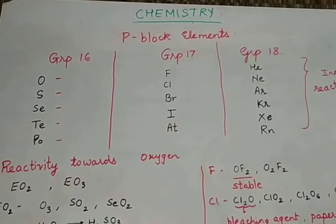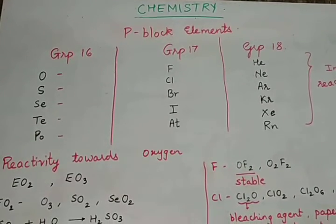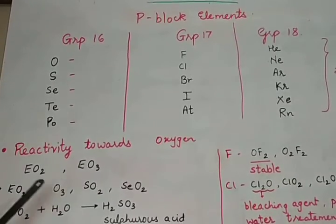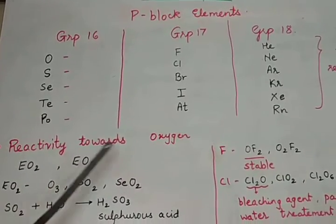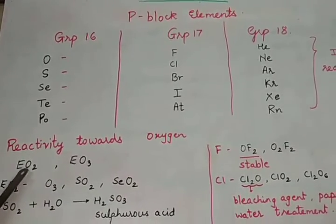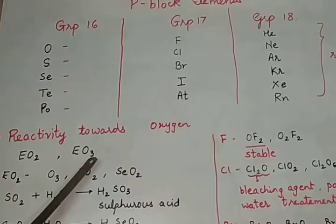This is about the reactivity of group 16, 17, and 18 elements with oxygen. If we talk about group 16, the group 16 elements react with oxygen and form two types of oxides: one is of EO2 type and one is of EO3 type.